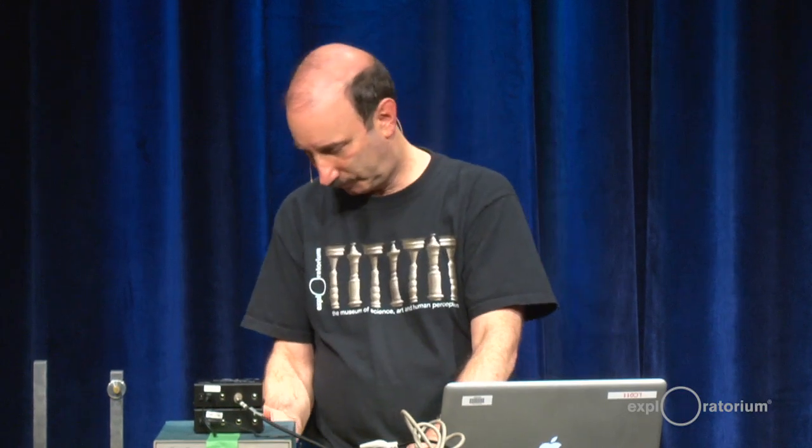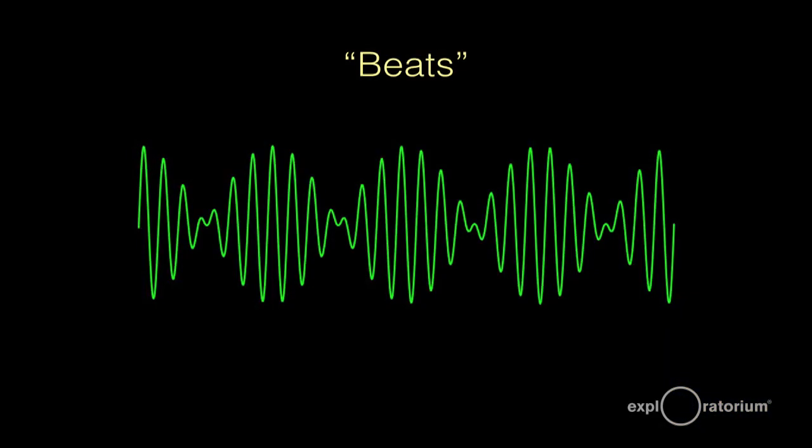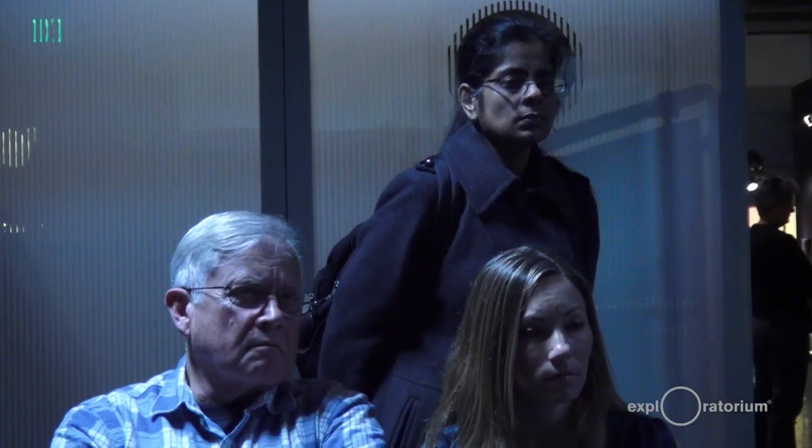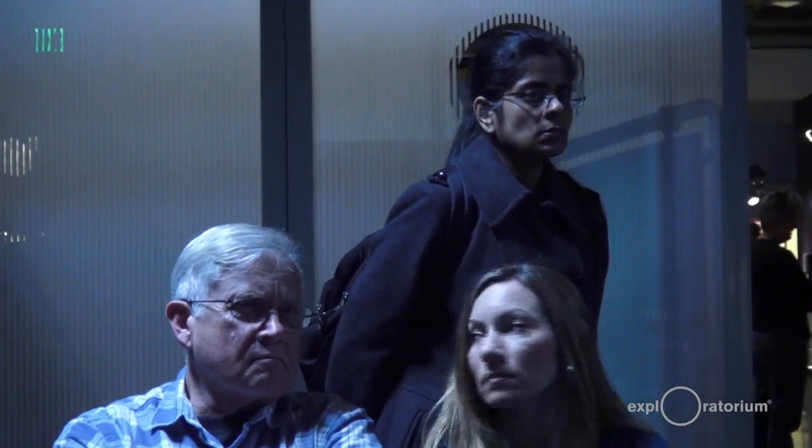Let's listen to those beat notes again carefully. I can change how fast the beat notes occur by detuning the notes. If I detune one, the beat notes come faster. In fact, if you count the number of beats per second, that equals the difference in frequency between the two notes. If we're hearing about four beats per second, then one oscillator is four cycles per second higher in frequency than the other.